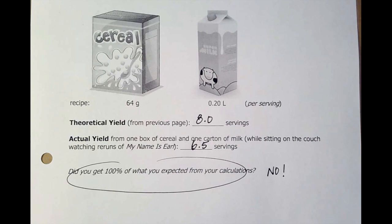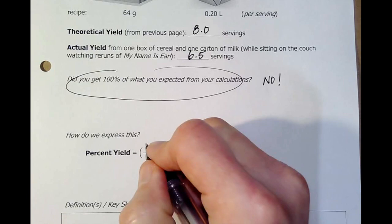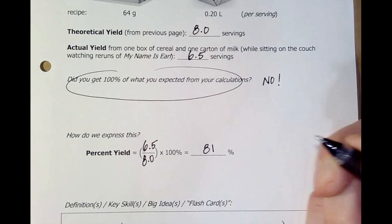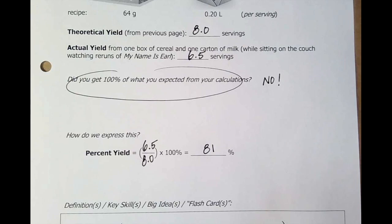Now, you're sitting in front of the couch, maybe not being perfectly careful. Cereal milk, cereal milk, cereal milk. You're sitting on the couch watching reruns of My Name is Earl. And you're pouring milk and cereal, milk and cereal. And you get five bowls, six bowls. You start to pour a seventh bowl. And you only get half a bowl. I only got 6.5 servings out of this thing. I expected eight, but I only got 6.5.